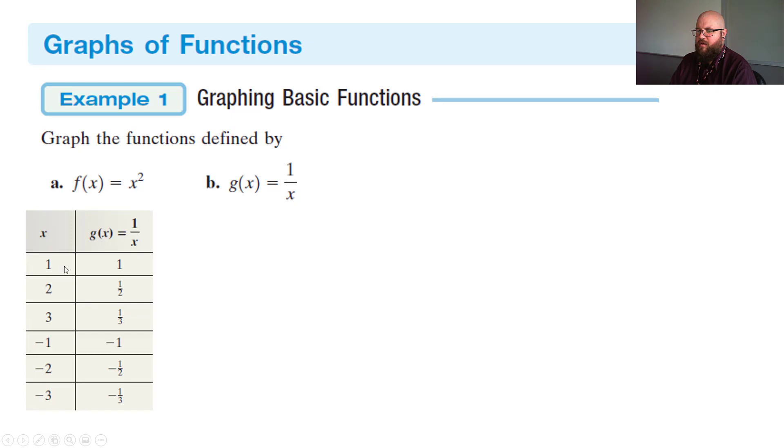So we have a 1, a 2, a 3, and then a negative 1, a negative 2, a negative 3. In which case, it gave us these values. 1 over 1 is 1, 1 over 2 is 1 half, 1 over 3 is 1 third, and so forth down here. So that gave us some points.